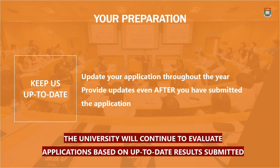One thing we always get asked is what happens if there is an update on your academic information. The non-JUPAS application system does allow you to update your academic profile even after you've submitted the application. So if your final results are released and you need the university to have the most updated information, you can submit the final results via the online system. We will use the updated academic results to re-evaluate your application.